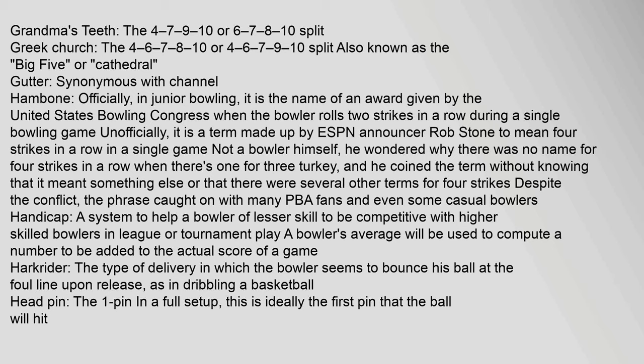Grandma's teeth: the 4-7-9-10 or 6-7-8-10 split. Greek church: the 4-6-7-8-10 or 4-6-7-9-10 split; also known as the big five or cathedral. Gutter: synonymous with channel. Hambone: officially in junior bowling, an award given by the United States Bowling Congress when the bowler rolls two strikes in a row. Unofficially, a term coined by ESPN announcer Rob Stone to mean four strikes in a row — he wondered why there was no name for four strikes when there was one for three (turkey), and coined the term. Despite the conflict, the phrase caught on with many PBA fans and casual bowlers.